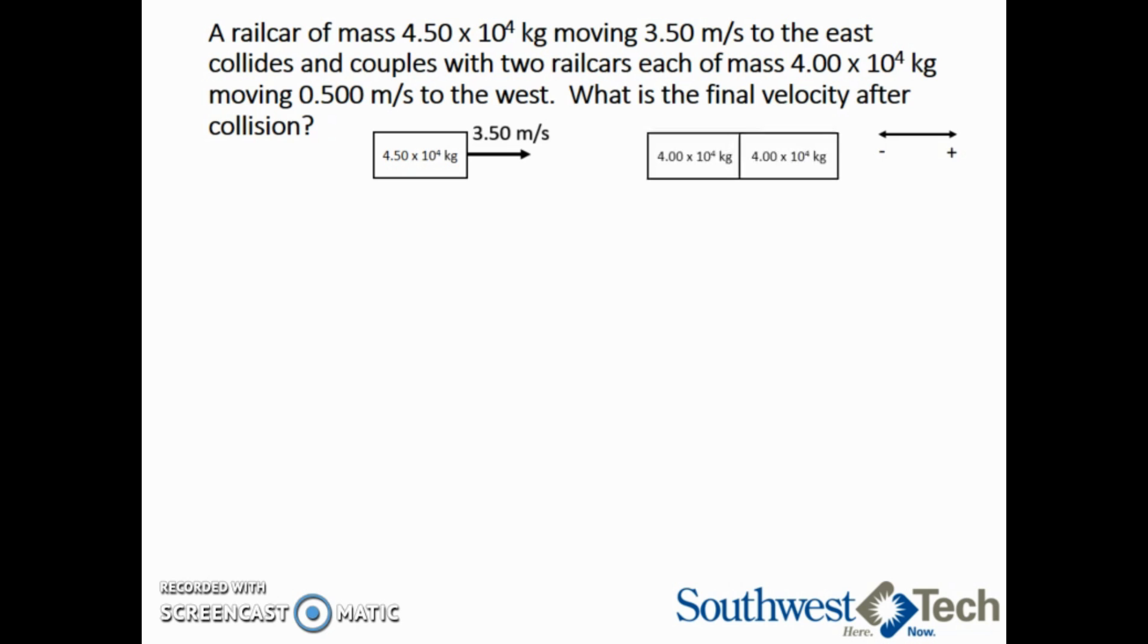In the other direction, we have two railcars that each have a mass of 4 times 10 to the 4 kilograms moving to the left at 0.5 meters per second. The total mass of the two railcars is 4 times 10 to the 4 kilograms multiplied by 2, or 8 times 10 to the 4 kilograms.